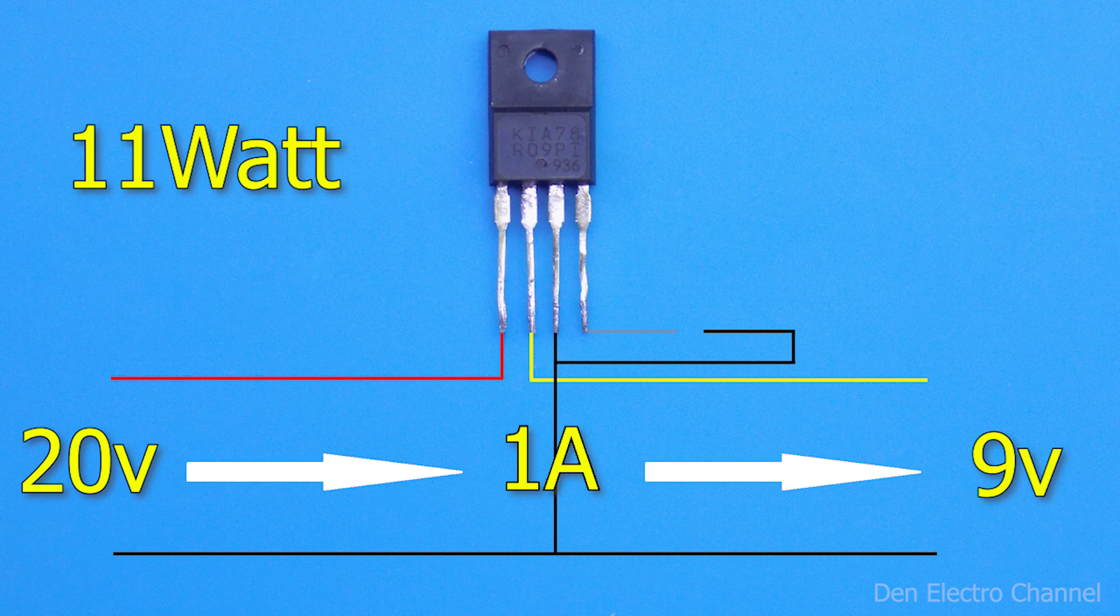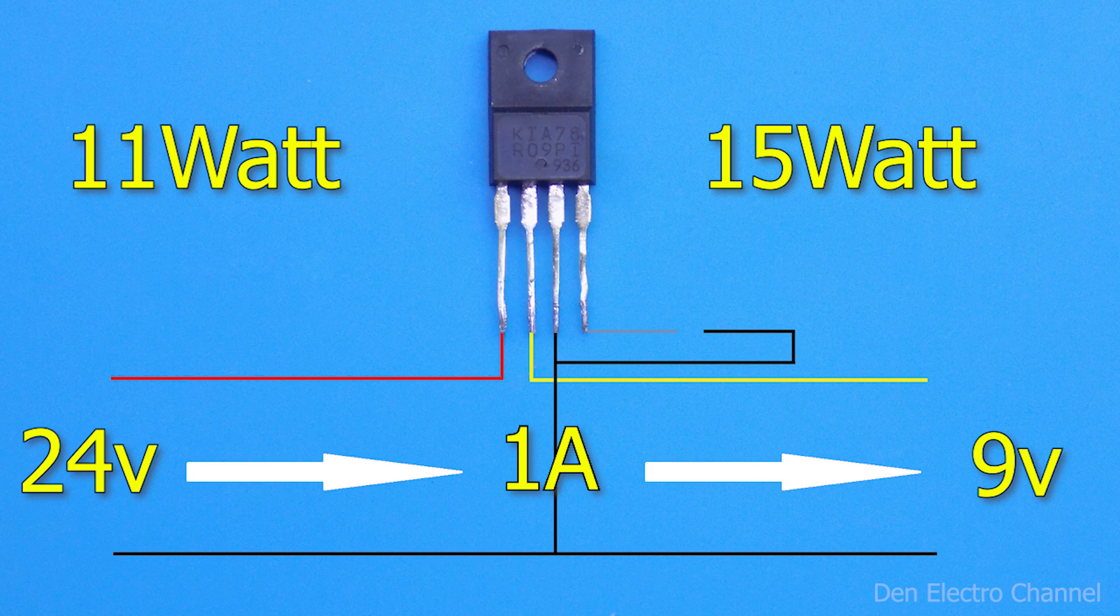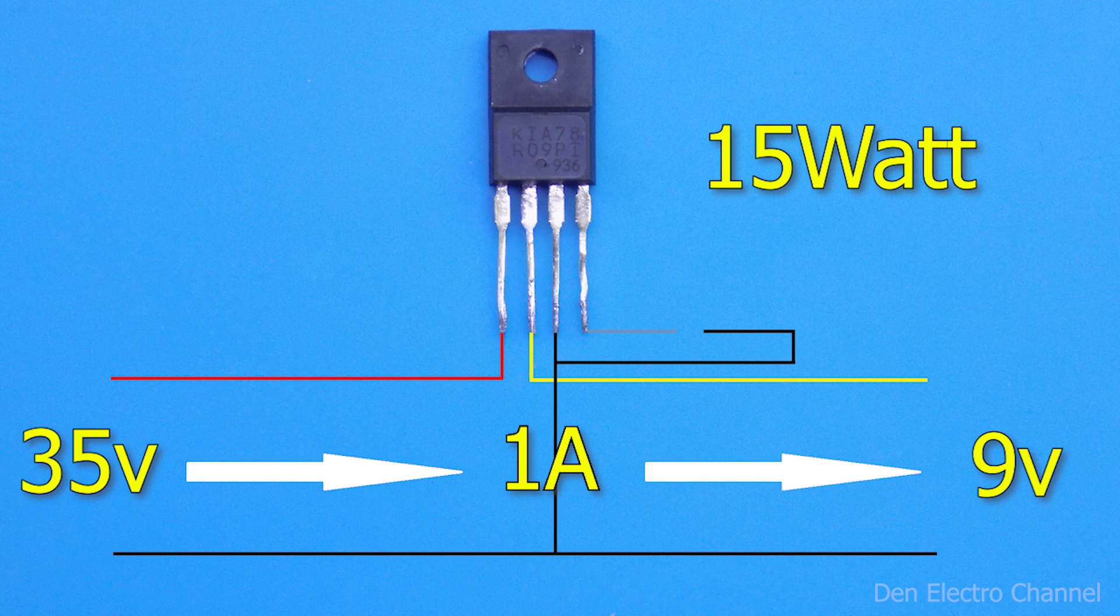The maximum power of this microcircuit is only 15 watts. Therefore, with such a current, only 24 volts can be supplied to the input. It turns out that in order to supply the promised 35 volts to the input, the current consumed by the load should be approximately half an ampere.